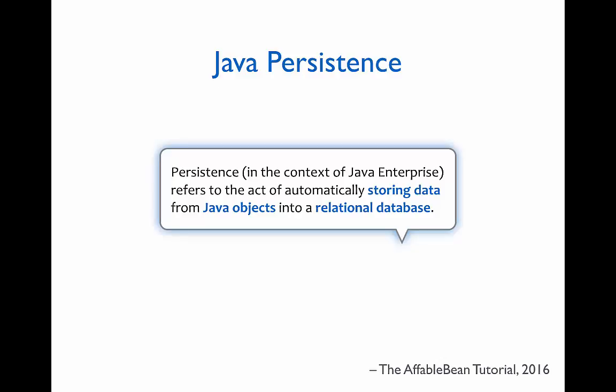The Java Persistence API used to be part of the EJB specification until the release of EJB3. But the specifications are still closely related, and as we saw in the four-tier architecture for enterprise applications, the Business Logic tier, where EJB technology resides, delegates certain responsibilities to the Persistence tier, where JPA technology resides. In the context of Java Enterprise applications, persistence refers to the ability to have data contained in Java objects automatically stored into a relational database.